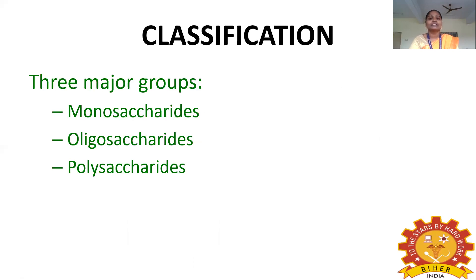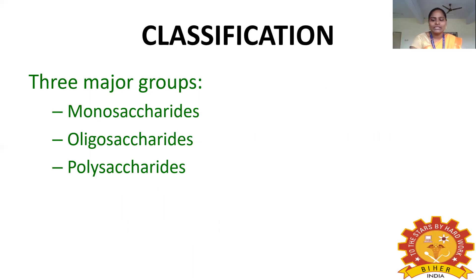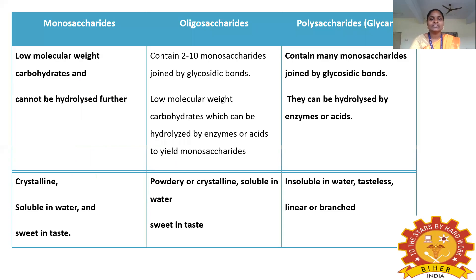Next, we are going to see the classification of carbohydrates. There are three types: monosaccharides, oligosaccharides, and polysaccharides.